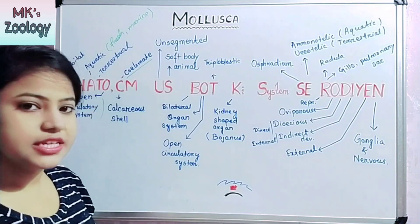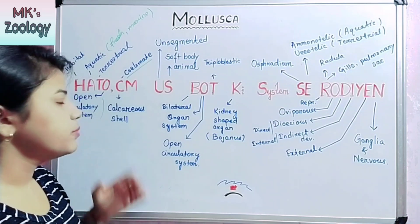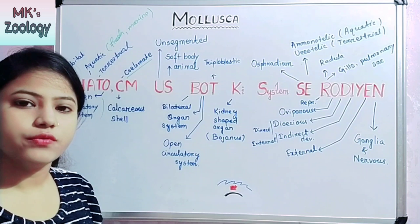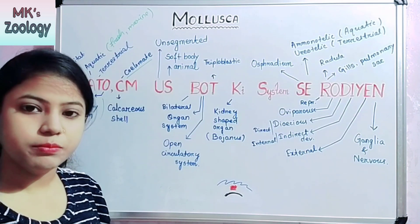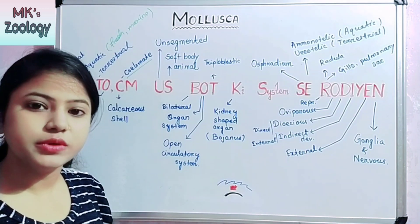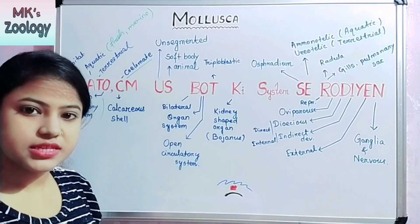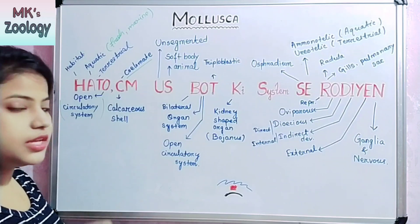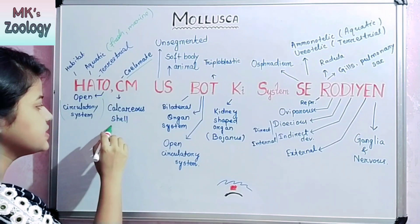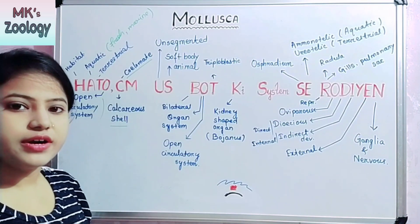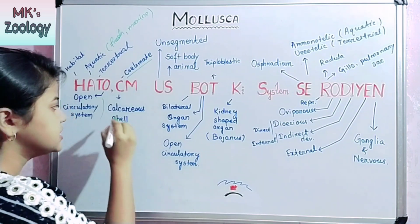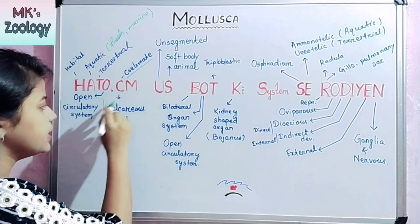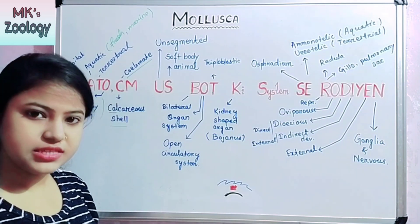So Mollusca has a coelom in their body, but the coelom is in the form of blood. The blood may not be red, but it fills the coelom. I will discuss the color of blood later. C also stands for calcareous shell — the body is covered by a calcareous shell, meaning calcium is present in the shell.